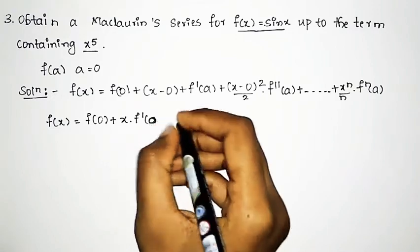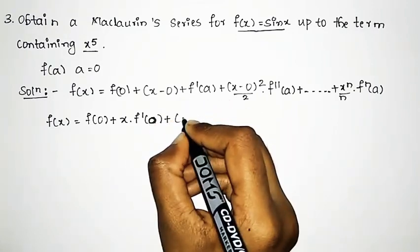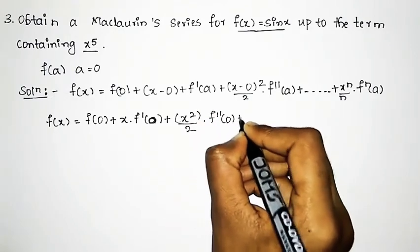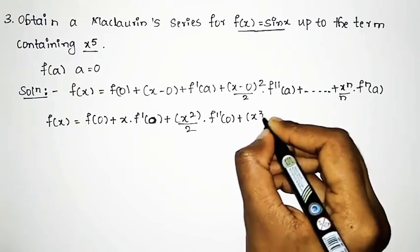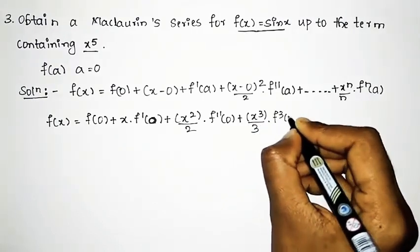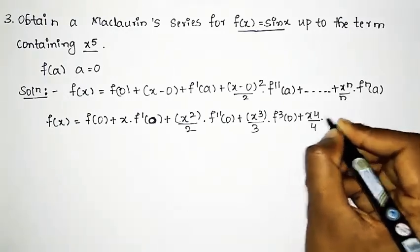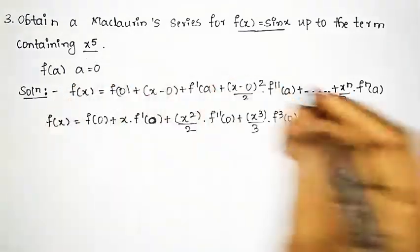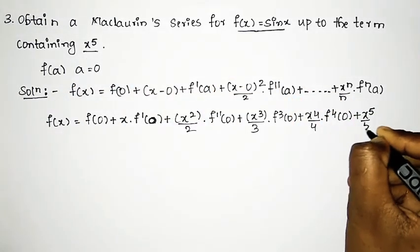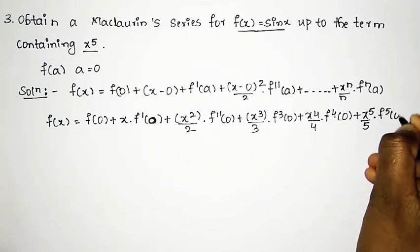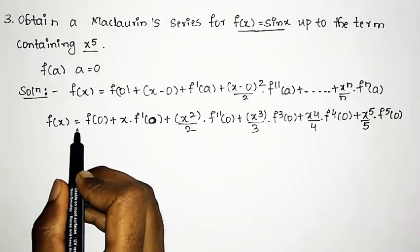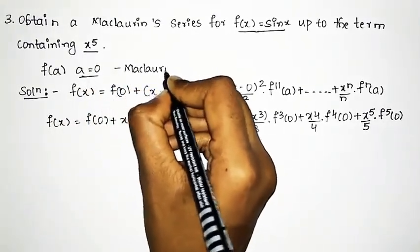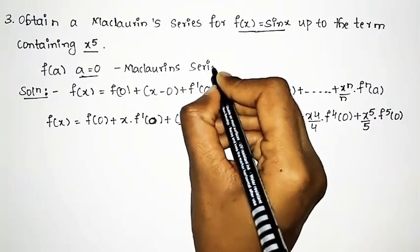plus x² / 2 · f''(0) + x³ / 3 · f'''(0) + x⁴ / 4 · f''''(0) + x⁵ / 5 · f'''''(0). We need to substitute a = 0 throughout. This is the Maclaurin series, so we need to find all derivatives up to the fifth.